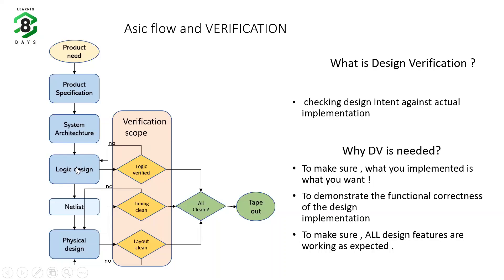Once our RTL is ready, we generate a netlist. Initially this netlist is at the gate level, and as you may know, at the gate level there will be some delays. We do GLS — gate level simulation — which has multiple parts. First, we do verification without delay on whatever netlist we have, and then we get another netlist with proper delays.